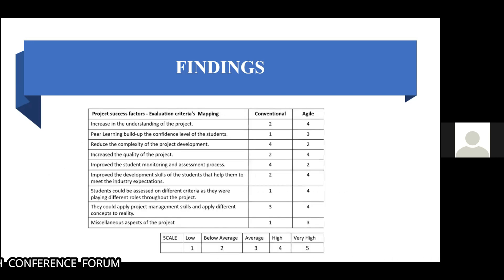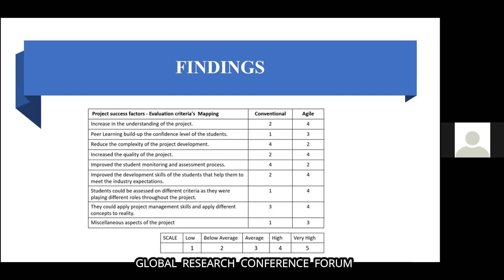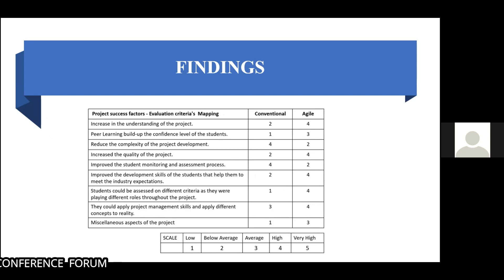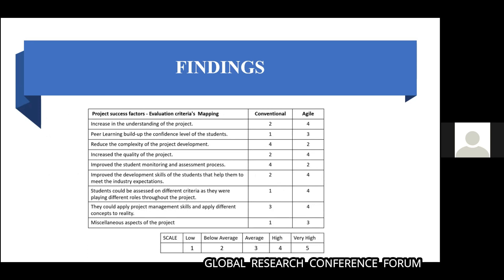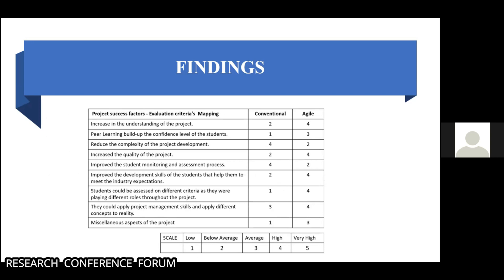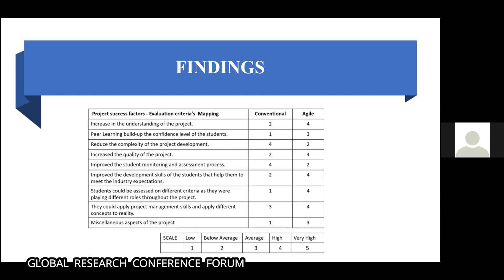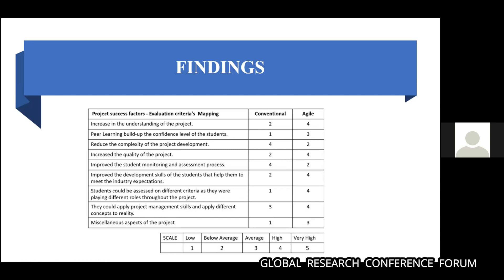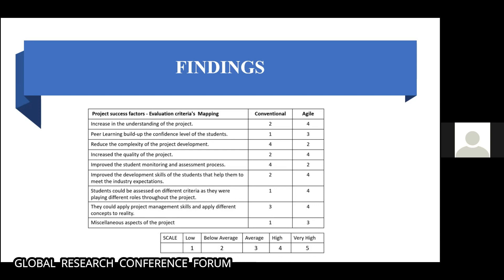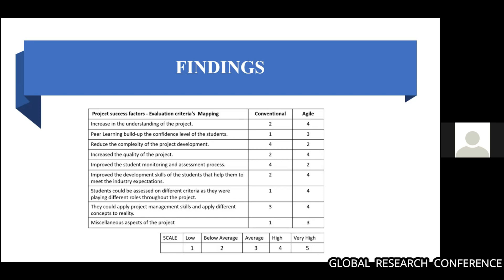Group A and Group B developed projects according to their respective models — linear waterfall and Scrum. Feedback was taken from mentors, and project success factors were evaluated on a scale of one to five. It was found that Agile values were higher than waterfall values, and students accepted the Agile way of developing projects.